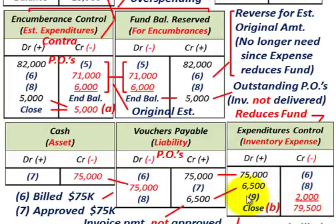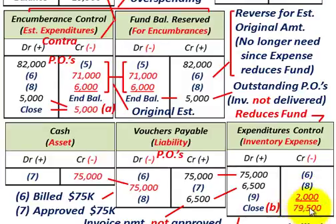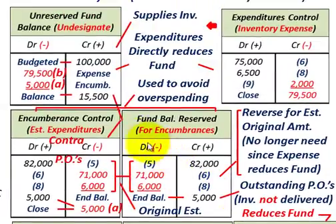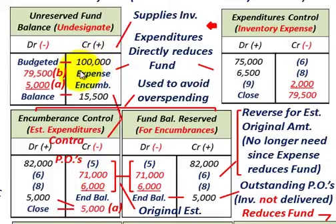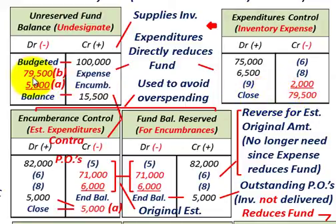Our net amount in the expenditures control account is $79,500 — based on debits of $75,000 and $6,500, minus the $2,000 credit for inventory still on hand. We close it out at $79,500. For closing entries, the expenditures control moves to the unreserved fund balance: we had a budget of $100,000, and the expense recognized for the year reduces the unreserved fund balance. The debit goes to unreserved fund balance for $79,500.